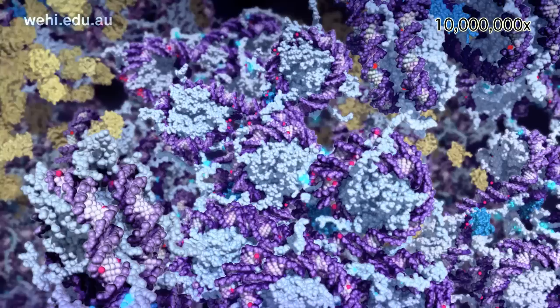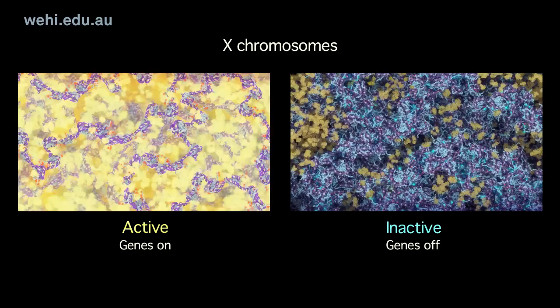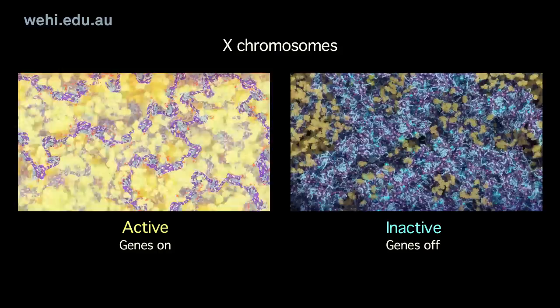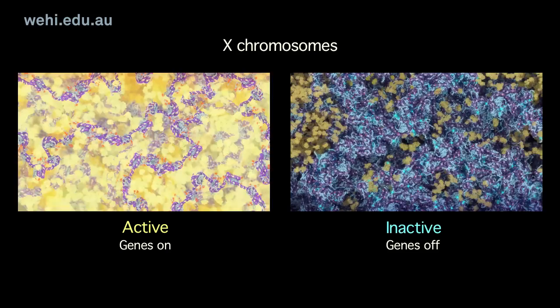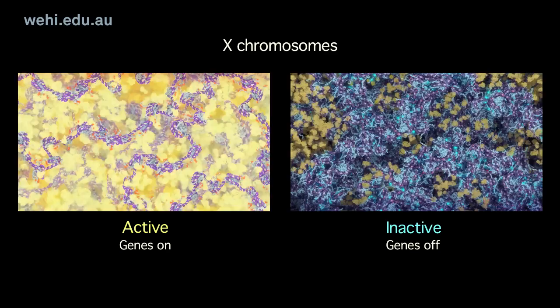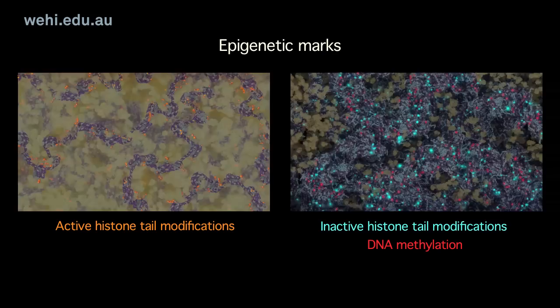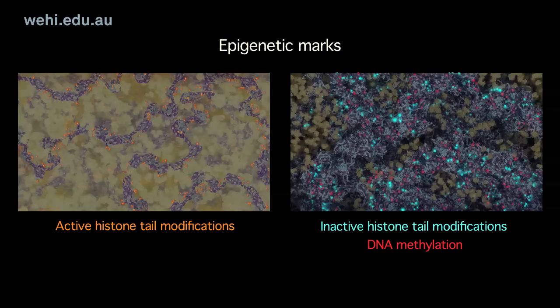This compact version of the chromosome is unable to be transcribed and is therefore silenced. The active X has a dispersed or open appearance, meaning the genes on this chromosome are active or on. The inactive X has a condensed or closed appearance, meaning the genes on this chromosome are inactive or off. Histone tail modifications and DNA methylation are examples of epigenetic marks — modifications that distinguish between the active and inactive chromosomes.